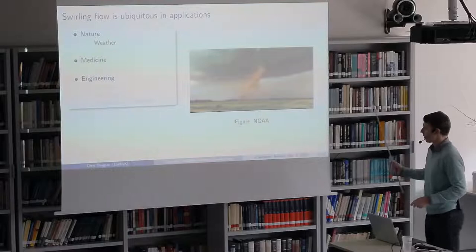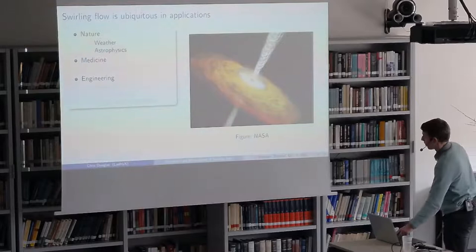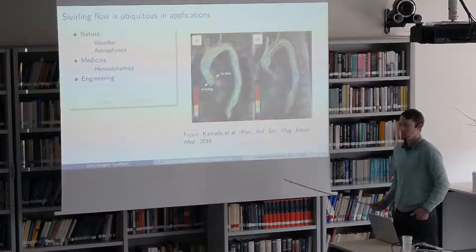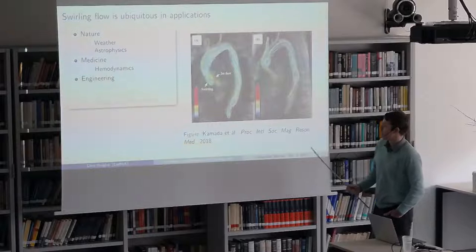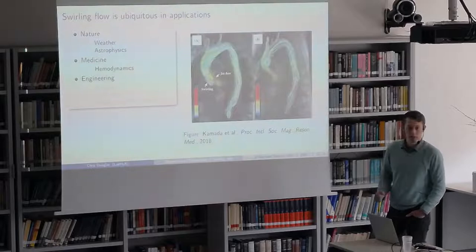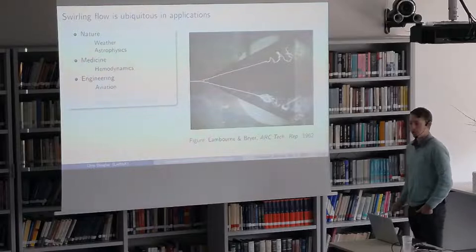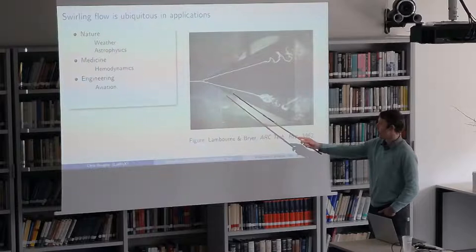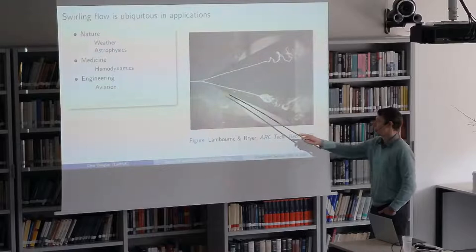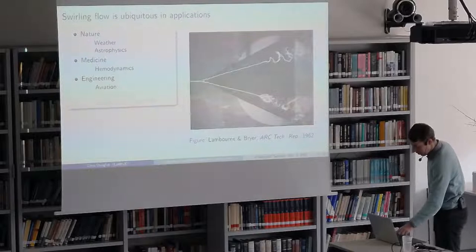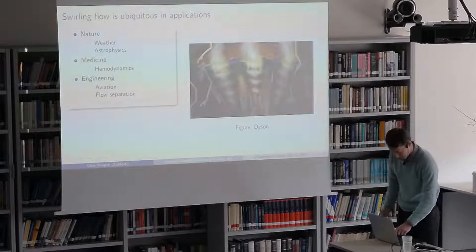Swirling jets are ubiquitous in all sorts of natural and engineering applications. We can think of things like tornadoes and weather, and also quasars in astrophysics — both manifestations of swirling jets. In hemodynamics, the flow around the heart has certain pathological conditions associated with excess swirl, which can lead to instabilities. In engineering, swirling jets appear in aviation flow over delta wings at high angle of attack, where vorticity trails down and intensifies until instabilities happen.